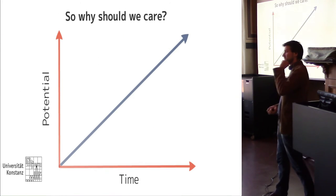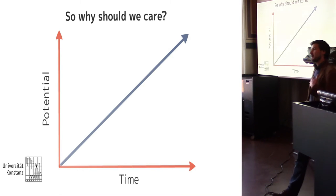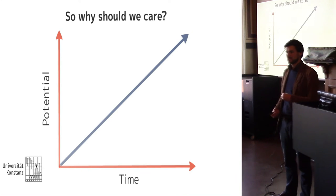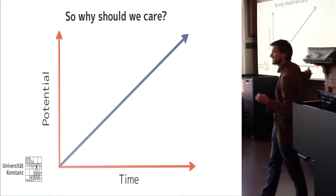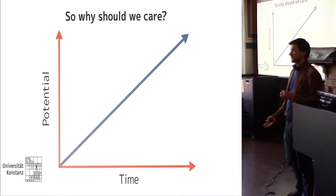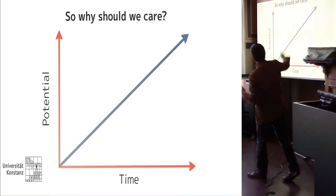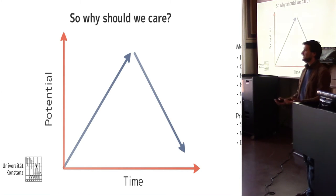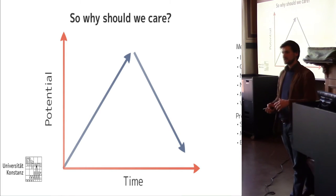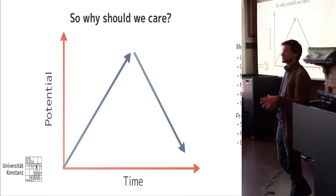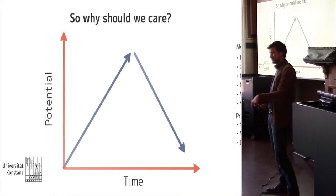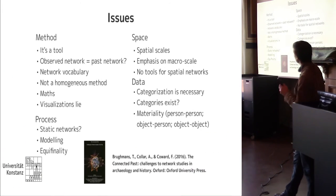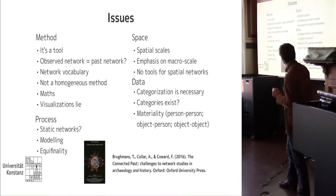Thinking through those four motivations, there is great potential for network science. Over time archaeologists explored that potential and discovered it is fantastic — whereas actually there are a lot of issues and challenges now that we are really starting to critically understand network science in archaeology and asking: what is this allowing me to do that I couldn't have done any other way?